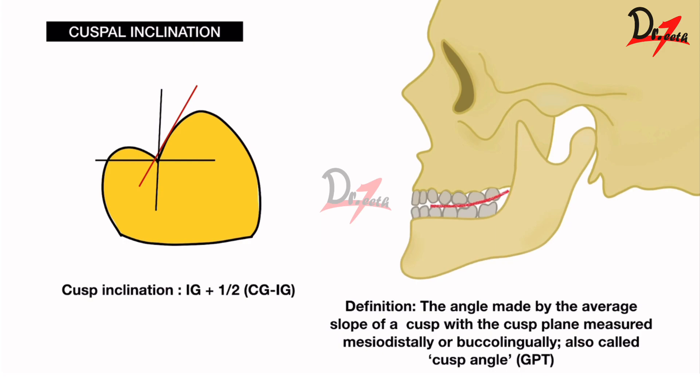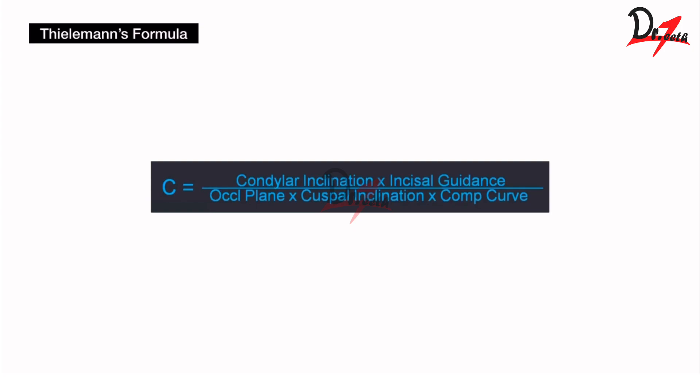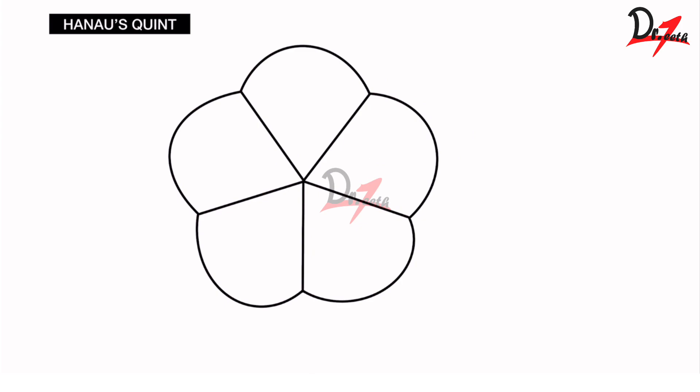Cuspal inclination is defined as the angle made by the average slope of the cusp with the cusp plane, measured mesiodistally or buccolingually — also called the cusp angle. Thilman's formula summarizes everything: condylar inclination × incisal guidance divided by occlusal plane × cuspal inclination and compensating curve. This is very important — remember this for your exams.